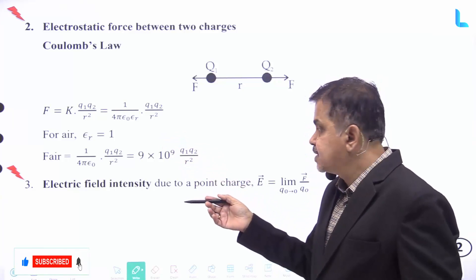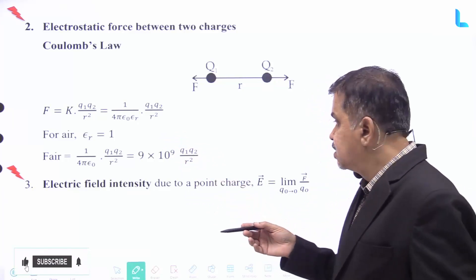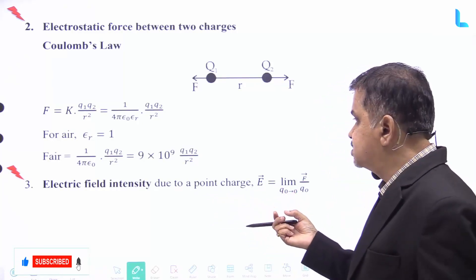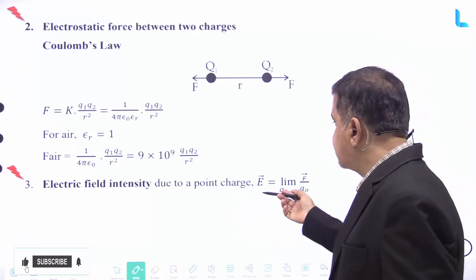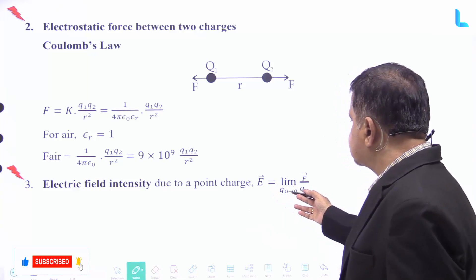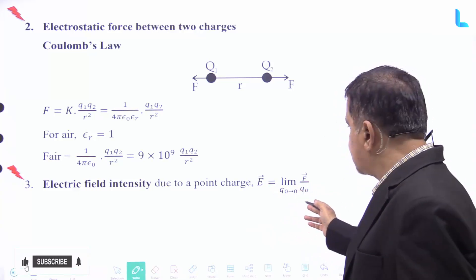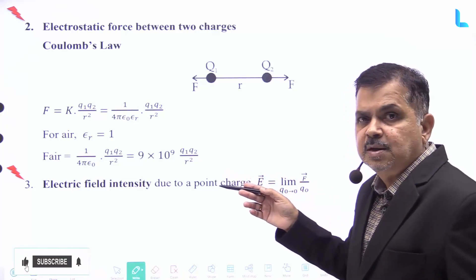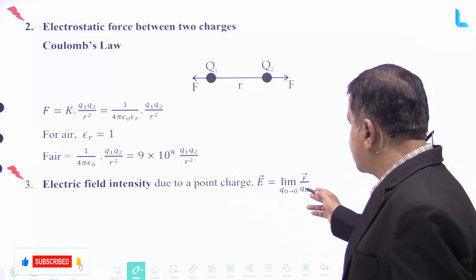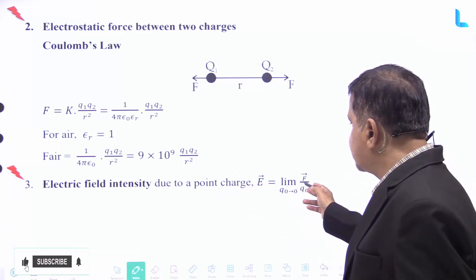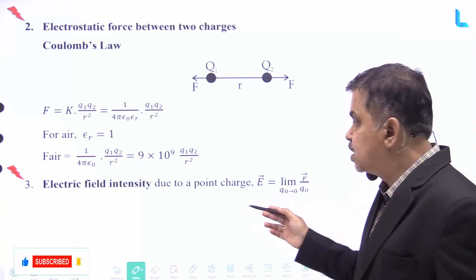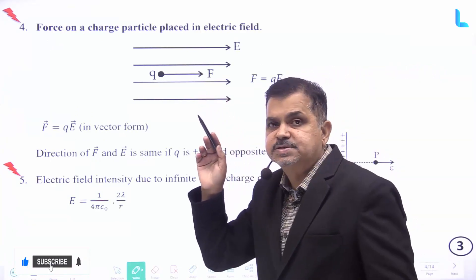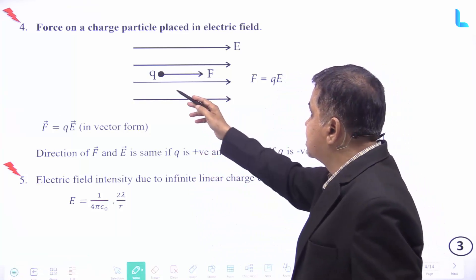Further, the electric field intensity due to a point charge: the electric field intensity can be given by E equal to limit as q naught tends to zero of F divided by q naught, where F is represented in vector form — that is, limit of vector F divided by q naught as q naught tends to zero.